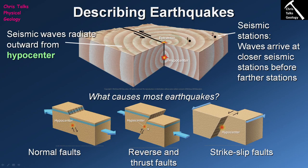Eventually the stored-up energy — the strain — is going to become so high that it will overcome friction and the two blocks of rock will start moving past each other. Once they start moving, this is when we get the release of energy: that energy gets turned into mechanical energy, which we call seismic waves, and we feel those as the earthquake.